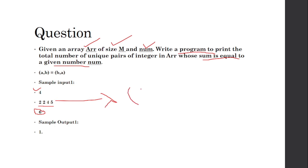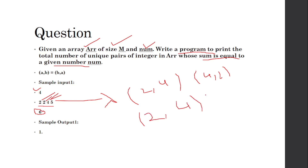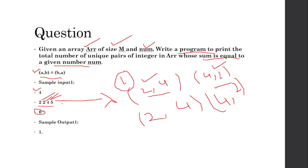How many pairs can you create? For example, (2, 4) is one pair. Then (4, 2) is also a pair. The key point is that (2, 4) and (4, 2) are treated as the same pair — you only count one of them. So you get just one unique pair here.